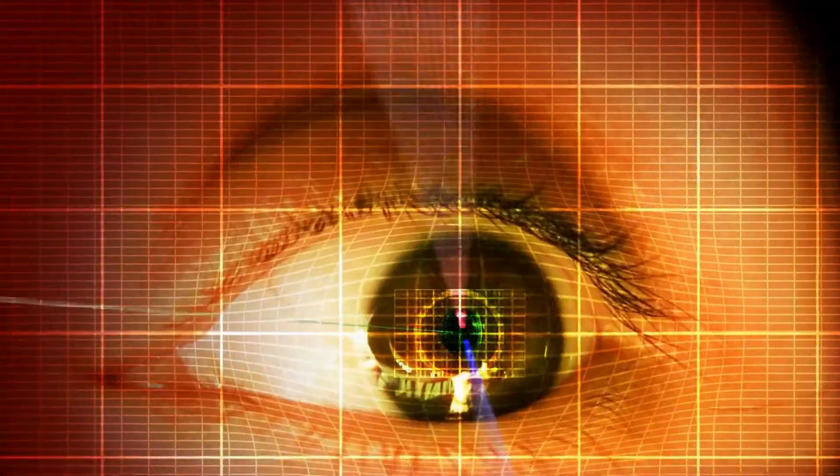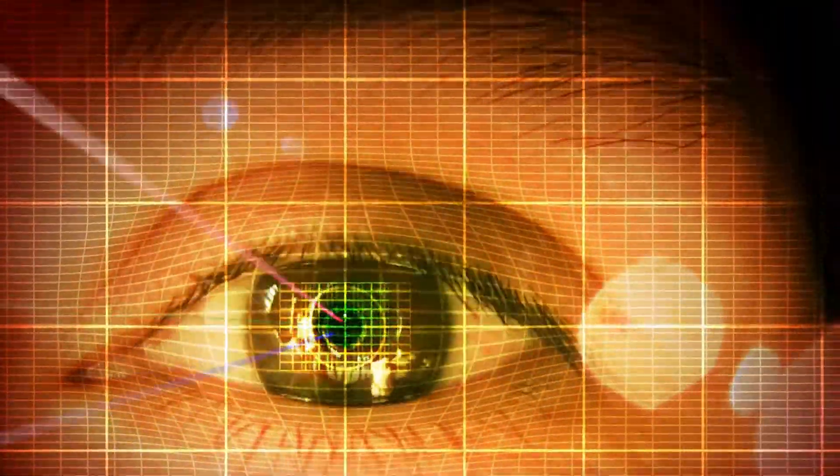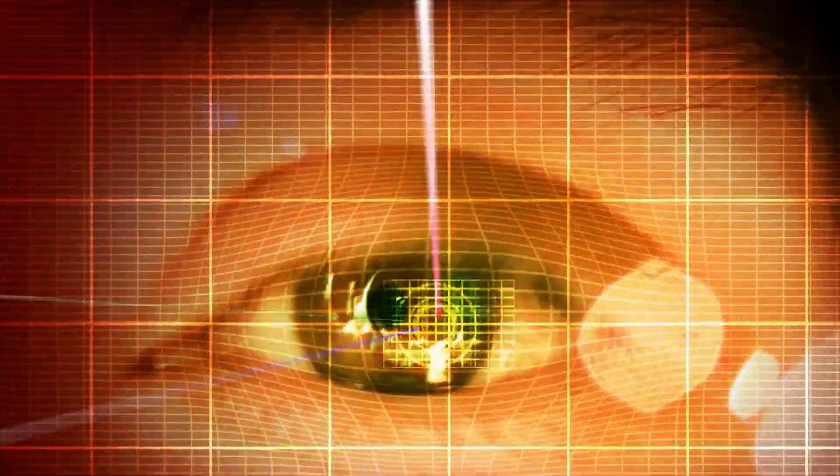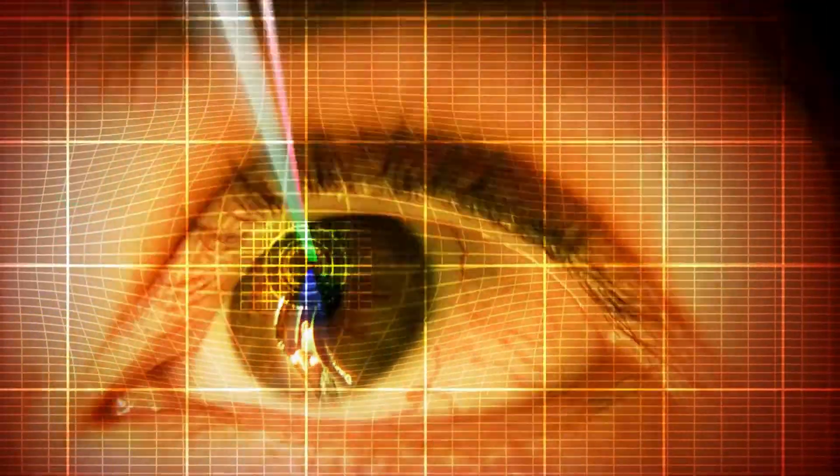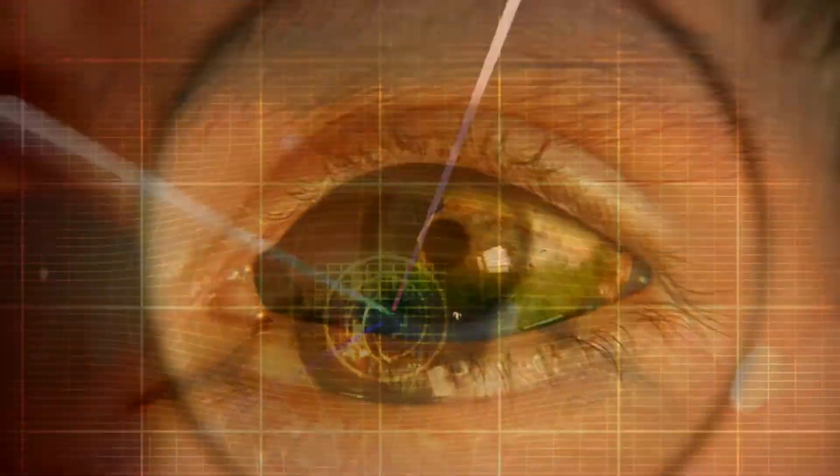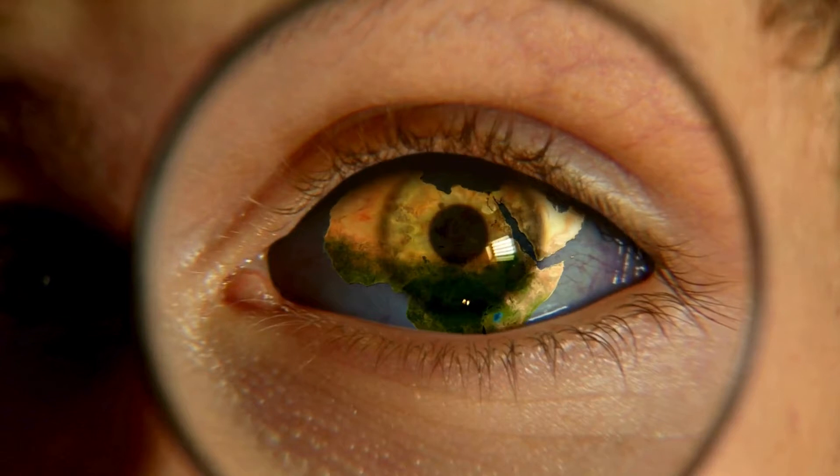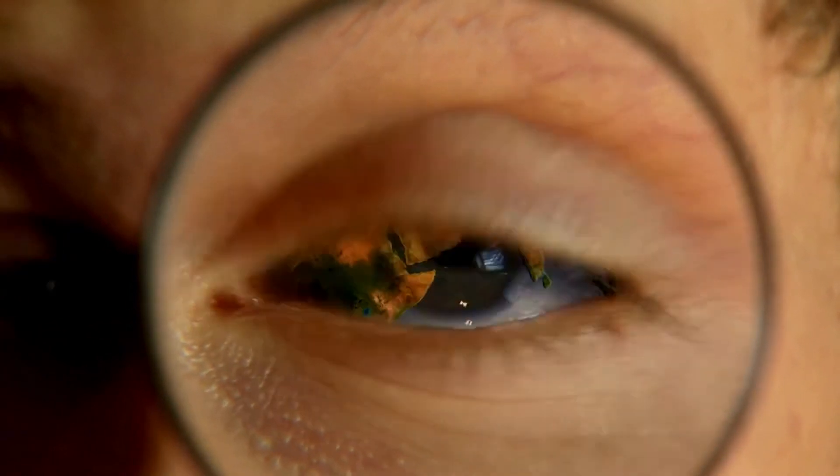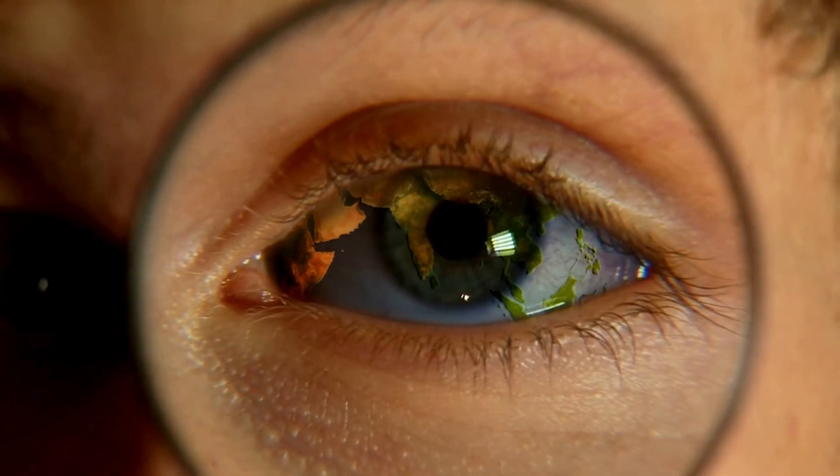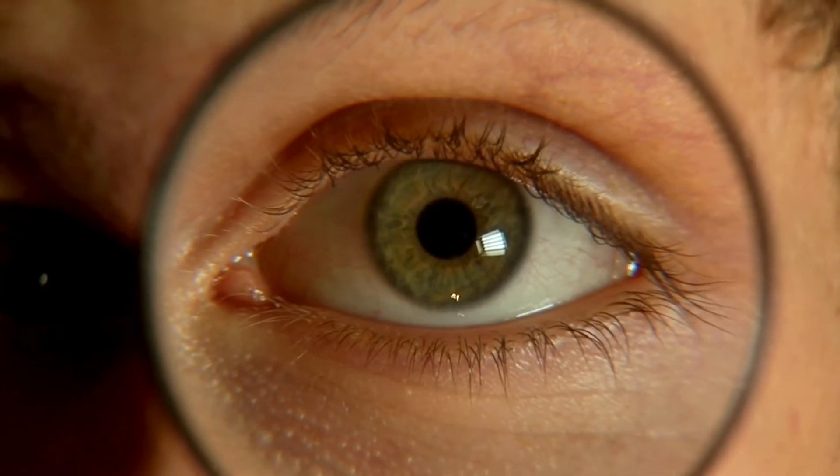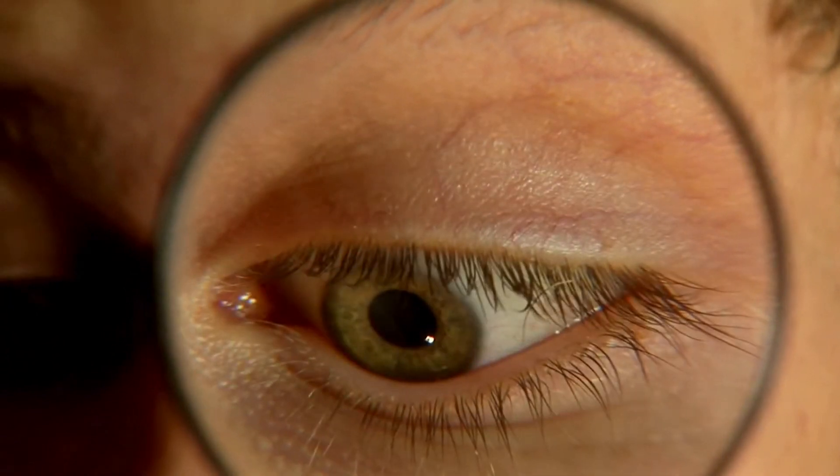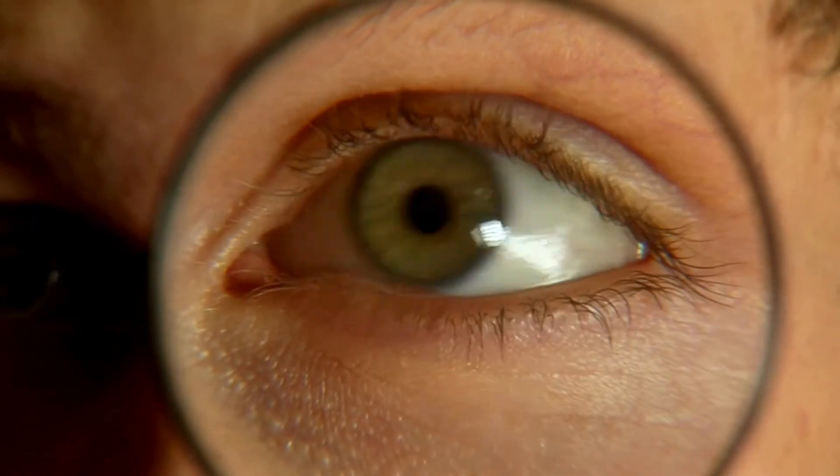But perhaps the most compelling argument against the evolution of the eye comes from its irreducible complexity. Remove any part of the eye and the whole system fails. It's all or nothing. The eye must have come into existence as a complete functioning unit. The alternative, that it evolved piece by piece over millions of years, defies logic and probability.